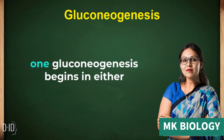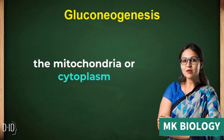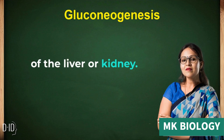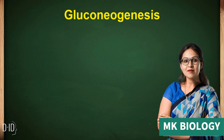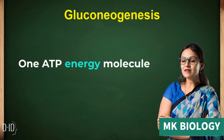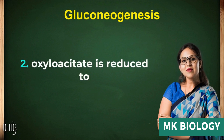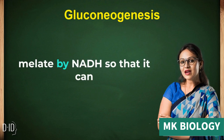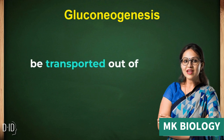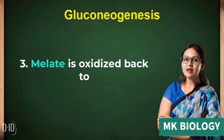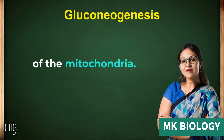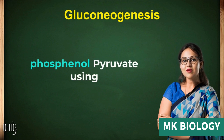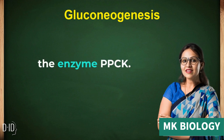Gluconeogenesis Pathway: Gluconeogenesis begins in either the mitochondria or cytoplasm of the liver or kidney. First, two pyruvate molecules are carboxylated to form oxaloacetate. One ATP energy molecule is needed for this. Oxaloacetate is reduced to malate by NADH so that it can be transported out of the mitochondria. Malate is then oxidized back to oxaloacetate once it is out of the mitochondria.